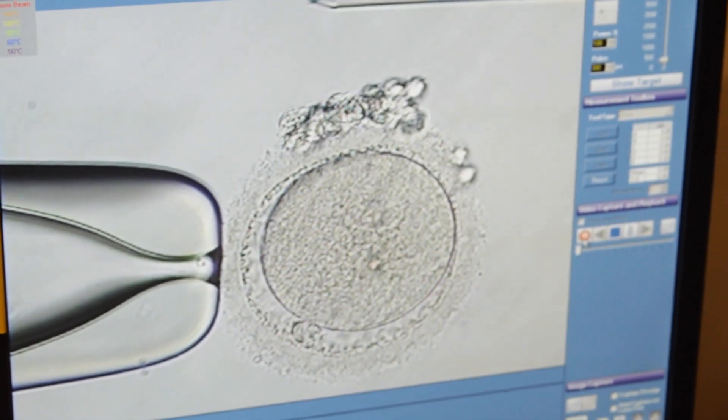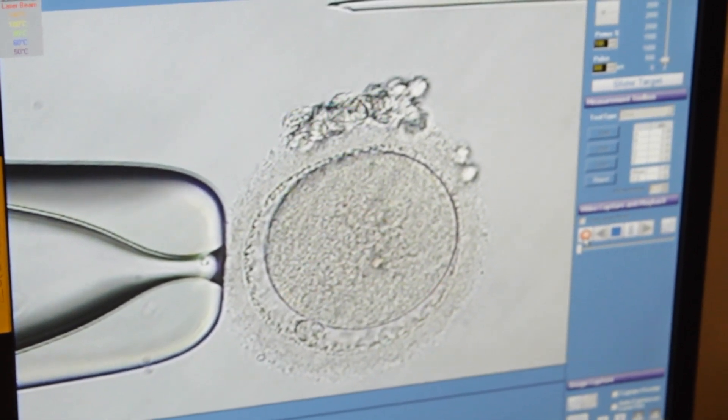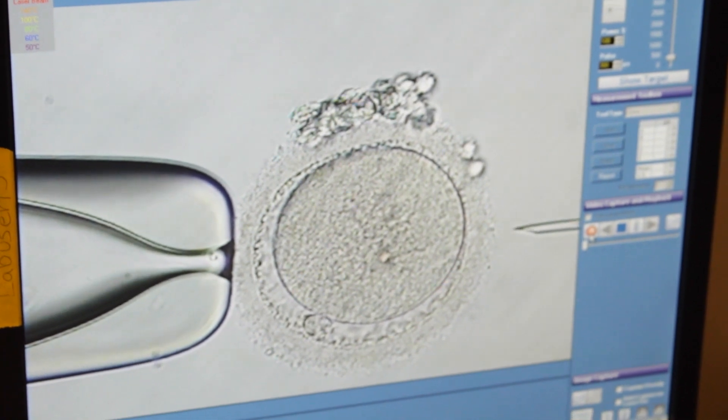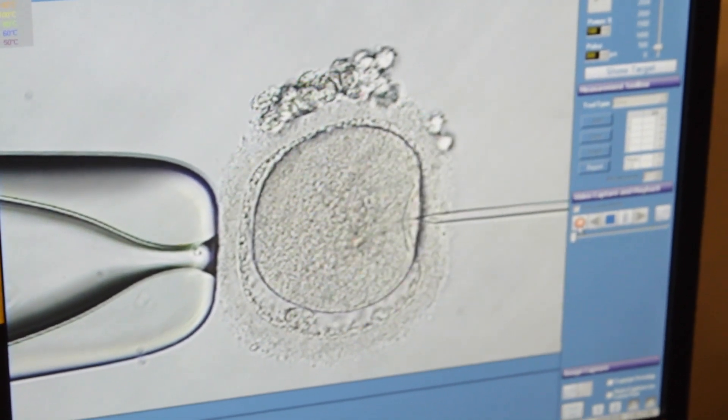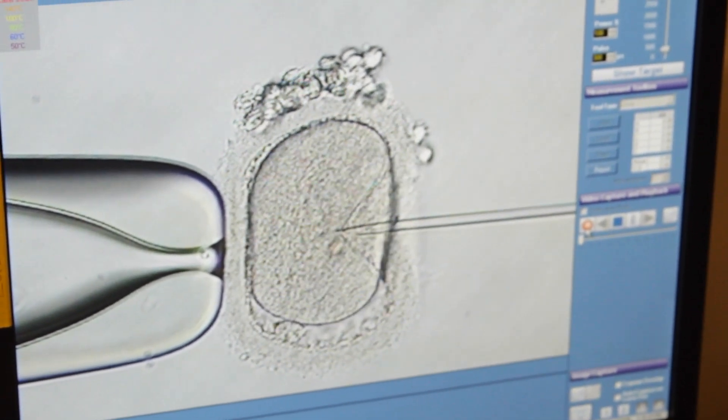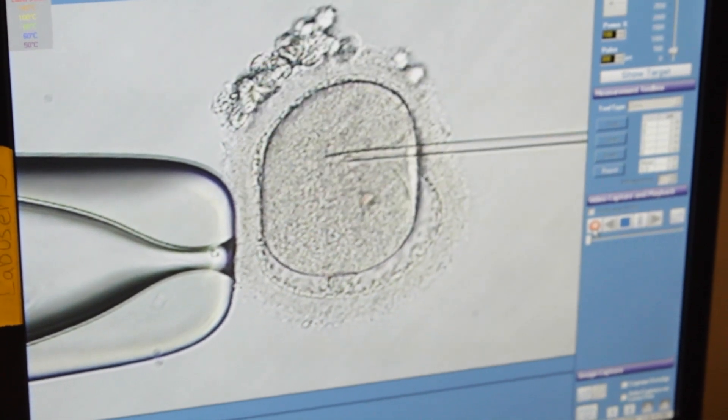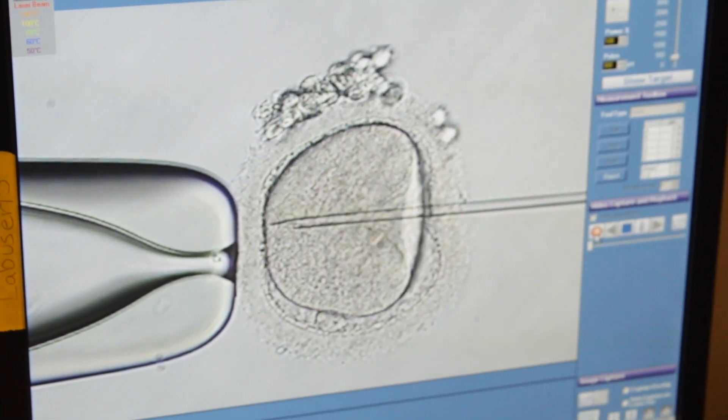Now Donna is bringing the sperm down to the very tip of the injection pipette. The idea is that we want to have no extra PVP injected into the egg.